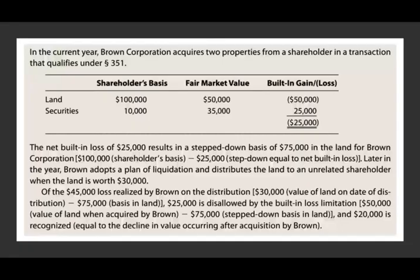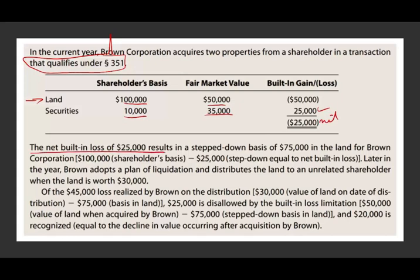The best way to illustrate this is to work an example. In the current year, B Company acquired two properties from a shareholder in a transaction that qualifies under Section 351 — which automatically triggers the possibility of a built-in loss limitation. The contributions were: land with a basis of $100,000 and fair market value of $50,000, giving a built-in loss of $50,000; and securities with a basis of $10,000 and fair value of $35,000, giving a built-in gain. When we net them, the net built-in loss is $25,000.